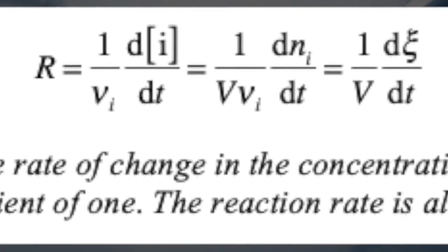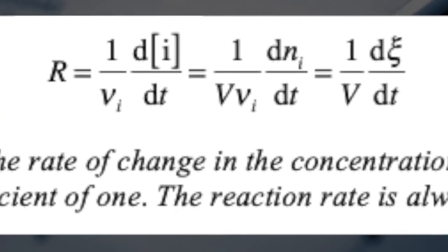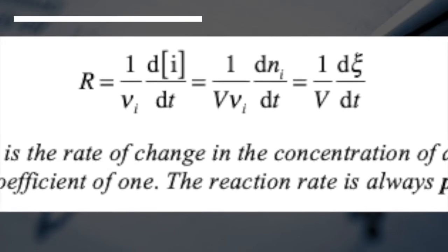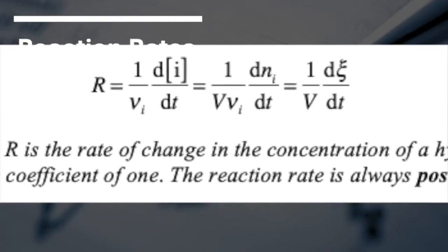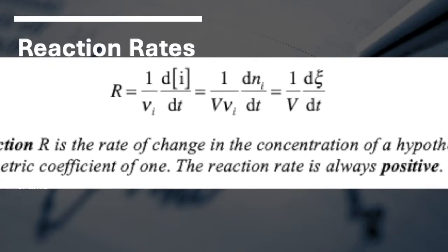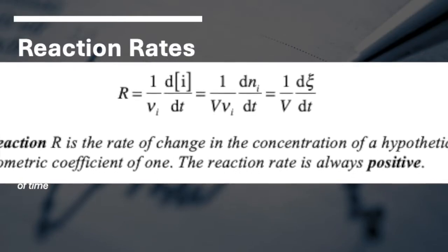Because of this, we define the rate mathematically as the rate of change of concentration divided by the stoichiometric coefficient of that particular species. This gives us one rate, R, for the entire reaction.